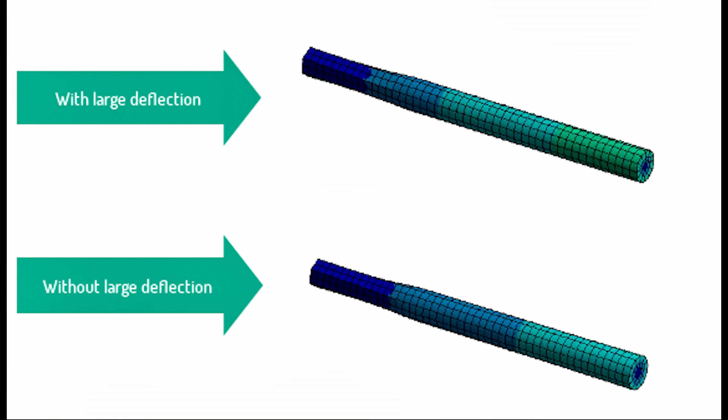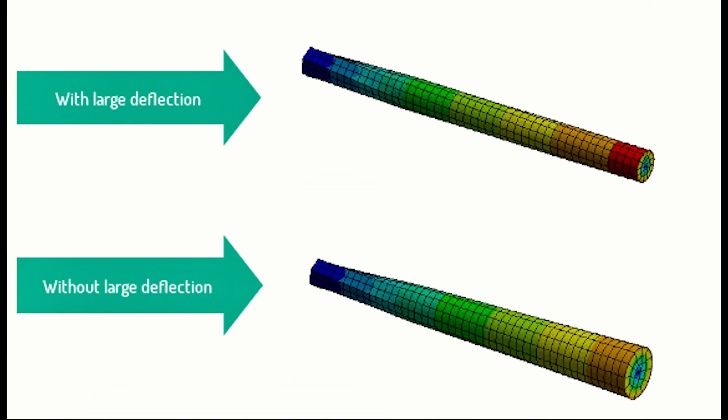If you're designing a high-speed rotating system like a gearbox or robotic arm, even small deflections can cause misalignment, resonance, and premature bearing failure. Ignoring deformation can lead to wrong load paths, misinterferences, and dynamic instability. It can also mean your simulation doesn't match your test results.